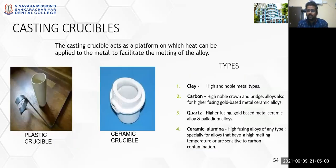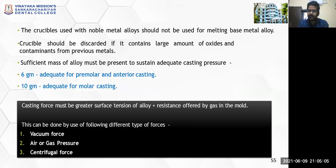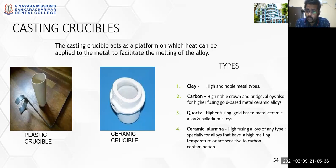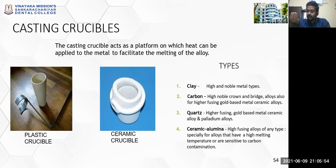You will be using a casting crucible, into which you place your investment setup with the mold space to get your casting. The casting crucible holds the molten metal. Casting crucibles act as a platform on which heat can be applied to a metal to facilitate its melting. You have different types: clay crucible, carbon crucible, quartz crucible, and ceramic aluminum crucible. The metal is melted to the required temperature to completely liquefy it before being pushed into the mold space.